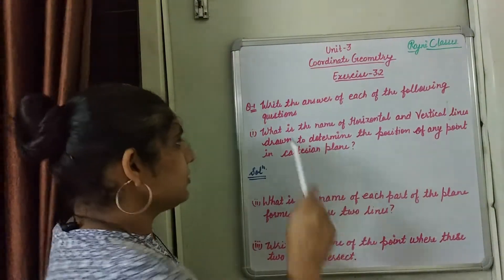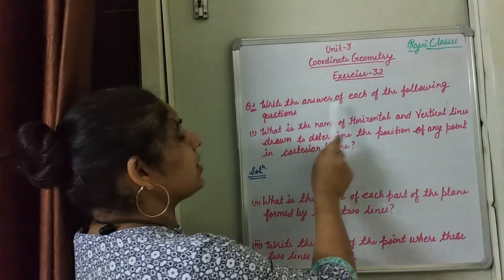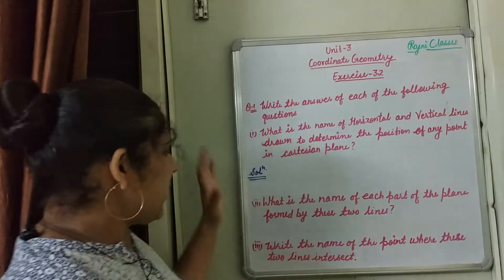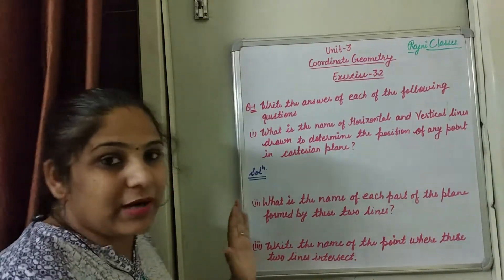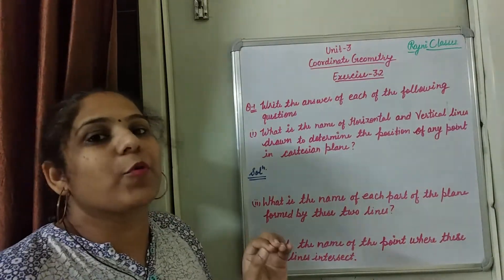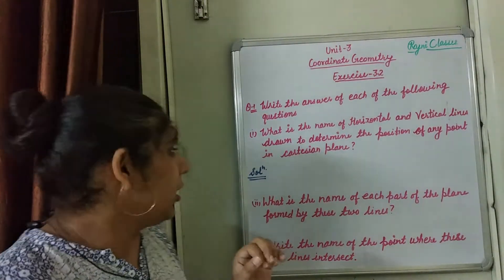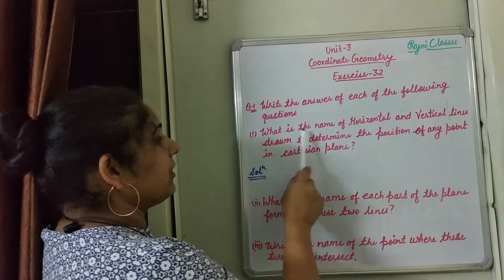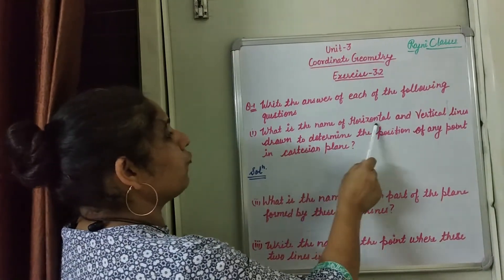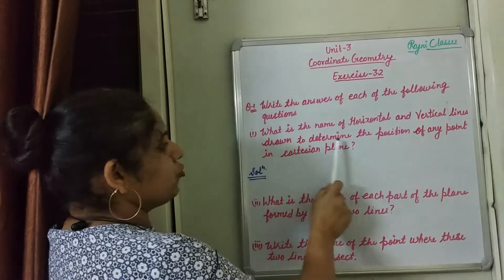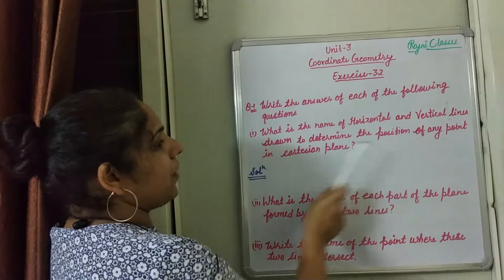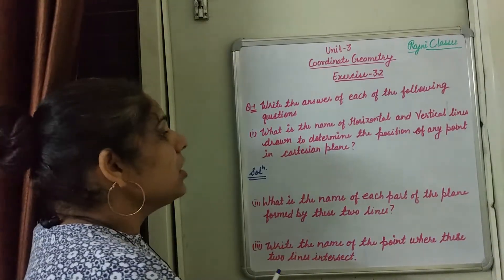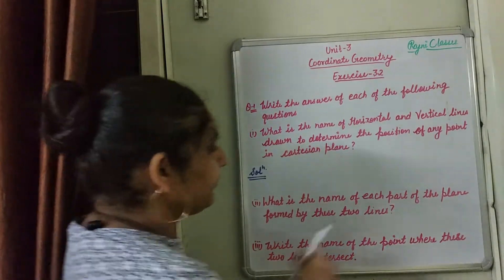The first question is: write the answer to each of the following questions. There are 3 parts. First part: What is the name of the horizontal and vertical lines drawn to determine the position of any point in the Cartesian plane?